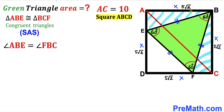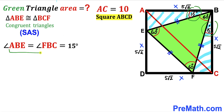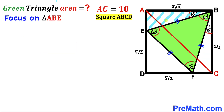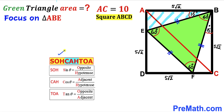Since the two triangles are congruent, angle ABE and angle FBC are congruent. We know angle EBF is 60 degrees and the full angle at B is 90 degrees, so we conclude that angle ABE is 15 degrees and likewise angle FBC is 15 degrees. Now let's focus on right triangle ABE and recall SOHCAHTOA.